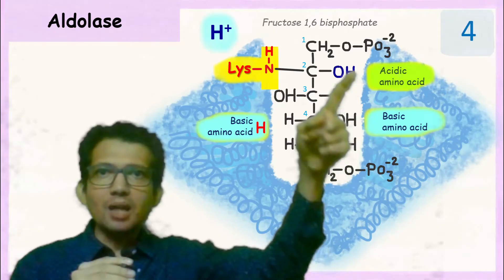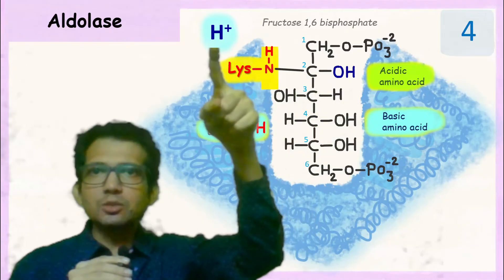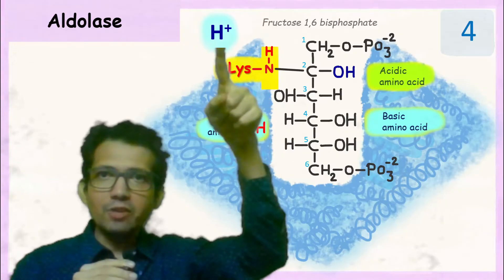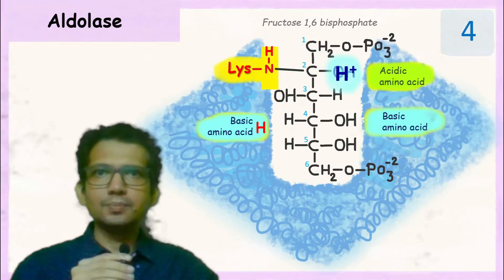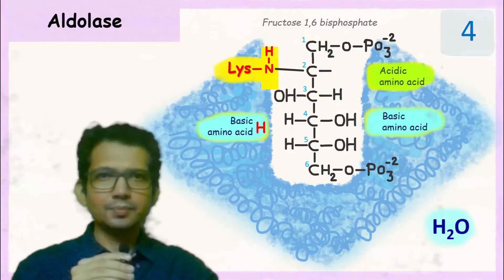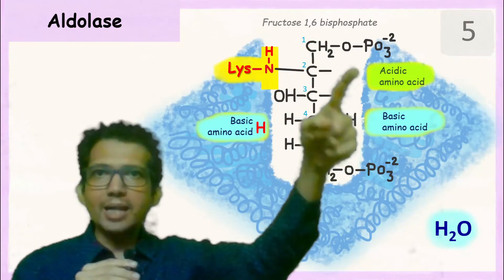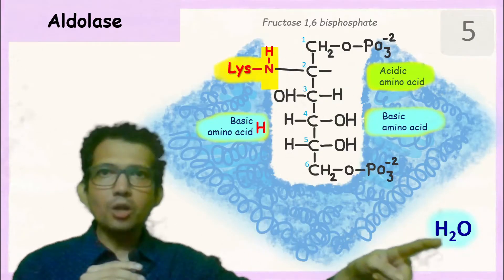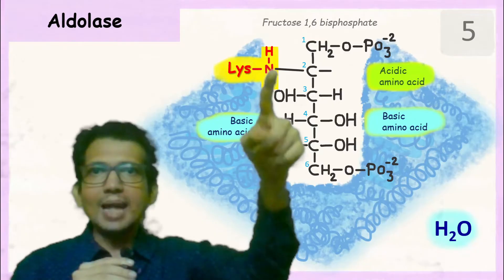In the next step, the hydroxyl group which is present at the second carbon atom reacts with H plus ion from the surrounding environment to form water. Since the OH group from the second carbon atom is lost as water, this bond now shifts between carbon and nitrogen of lysine.